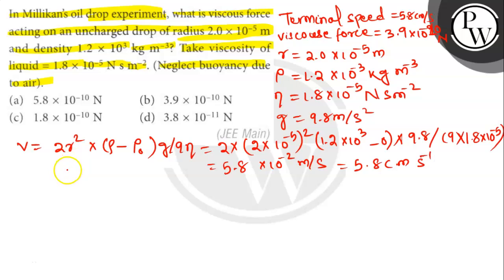Hence the terminal speed of the drop is 5.8 centimeter per second. The viscous force on the drop is given by F = 6πηrV, where F equals 6 into